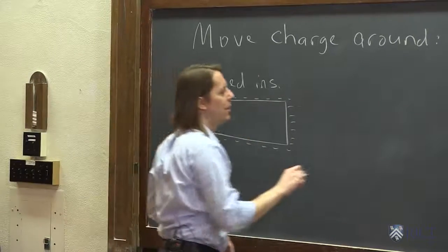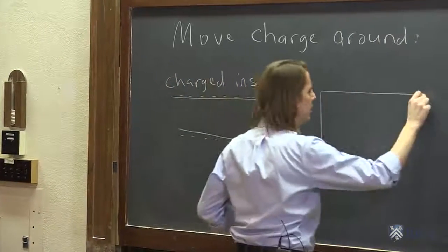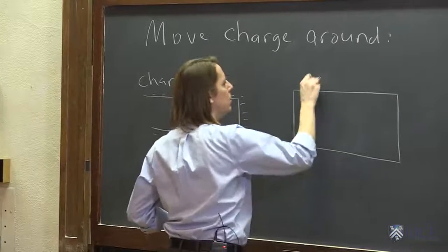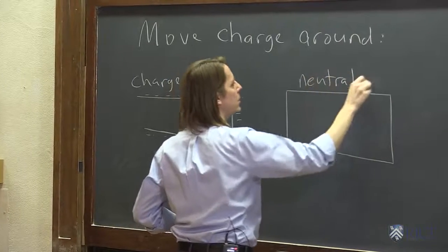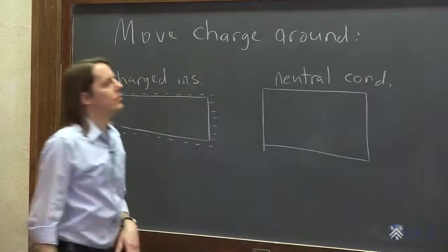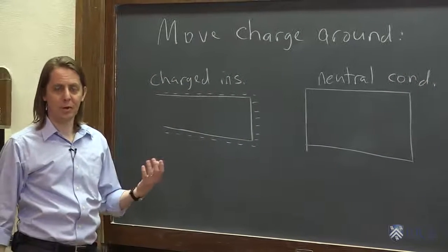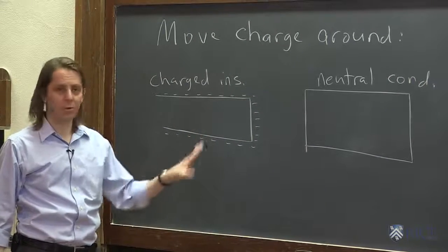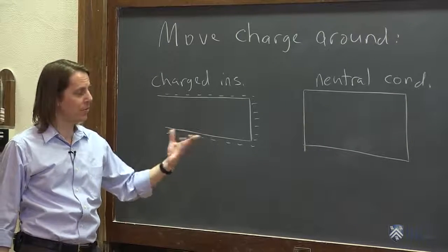And nearby, let's say we have a neutral conductor. So the conductor has free charge. Some of the electrons are free to move. It's still neutral, though. It needs those free electrons to keep it neutral.